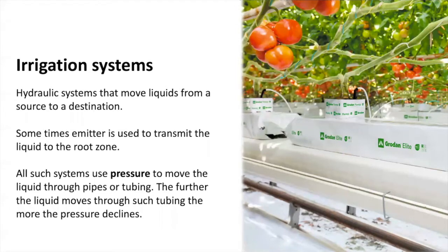An irrigation system is a hydraulic system that moves liquids from a source to a destination. Hydroponic systems using bags of substrate commonly use emitters to transmit liquid to the root zone. All irrigation systems use pressure to move water. Pumps, pipes, and tubing are usually required and sized depending on the type and size of the system.